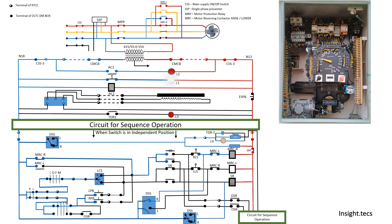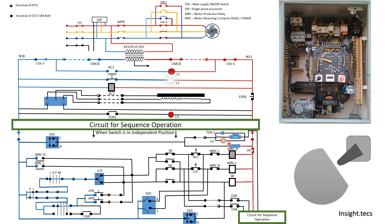Once the power moves toward MRCL, the raising operation continues to work. When the DSS comes back to its normal position, all its contacts will open — then MRCR will get de-energized. Once it gets de-energized, its contacts in the power circuit will open and the motor will stop rotating. This is how the raise operation occurs, and the DSS switch plays a major and crucial role in the operation of the OLTC.